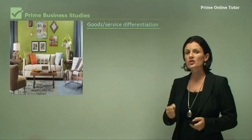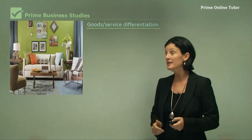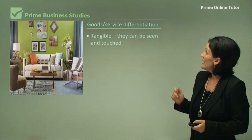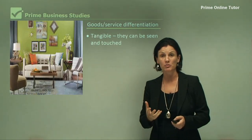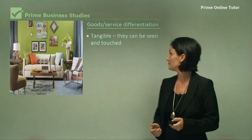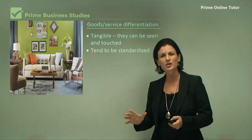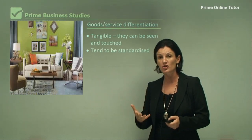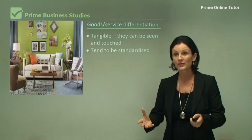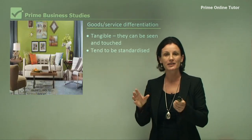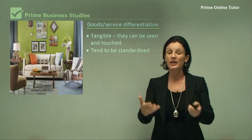The operations manager must also differentiate their good or service. In goods, we need to analyse exactly what a good is. A good is tangible — it can be seen and it can be touched. It tends to be standardised. Sometimes goods are customised but generally goods are the same. So if I produce a Nike runner, I will produce thousands of exactly the same runner. It's very easy to produce that way and then sell to the consumer.